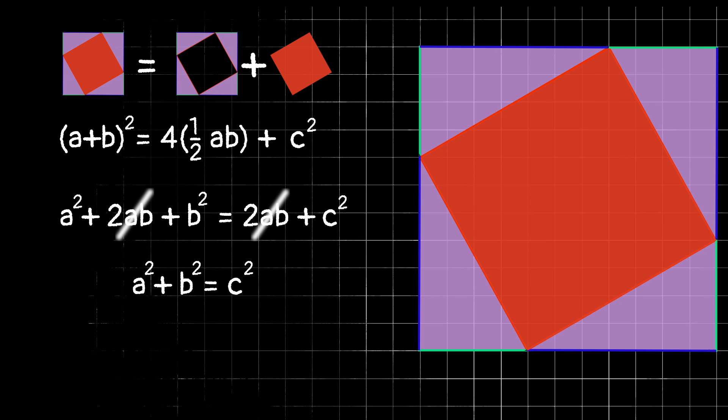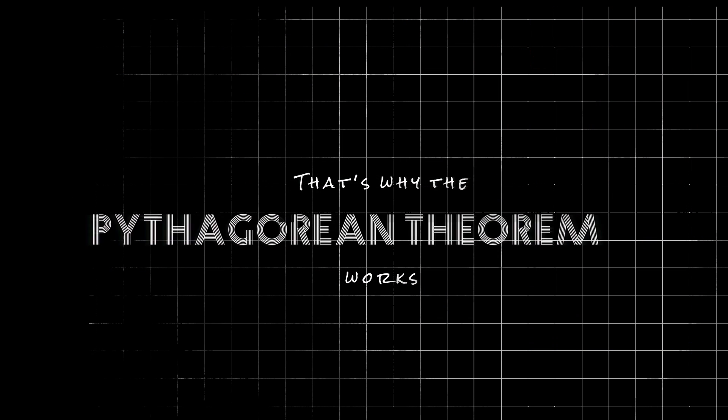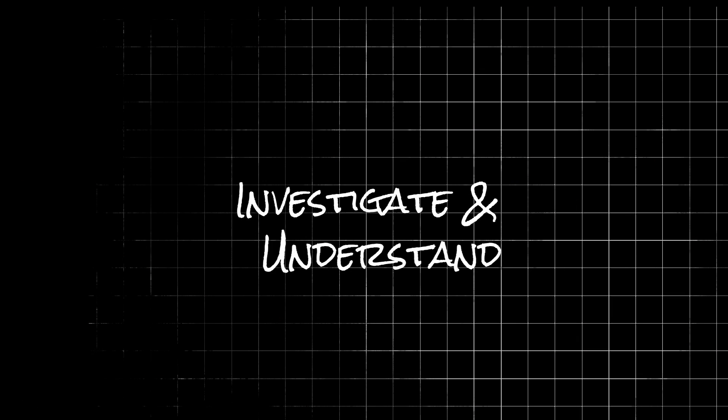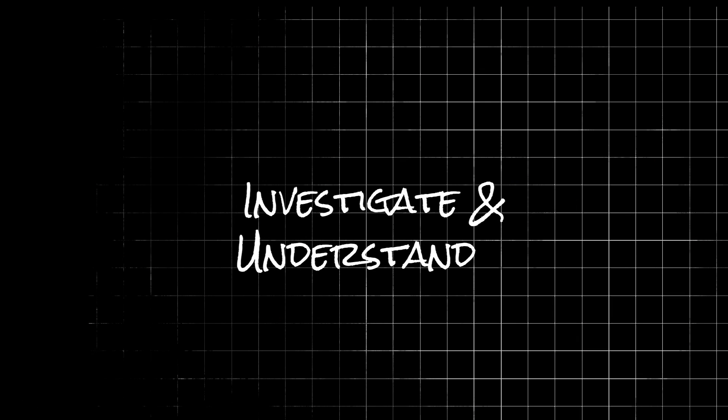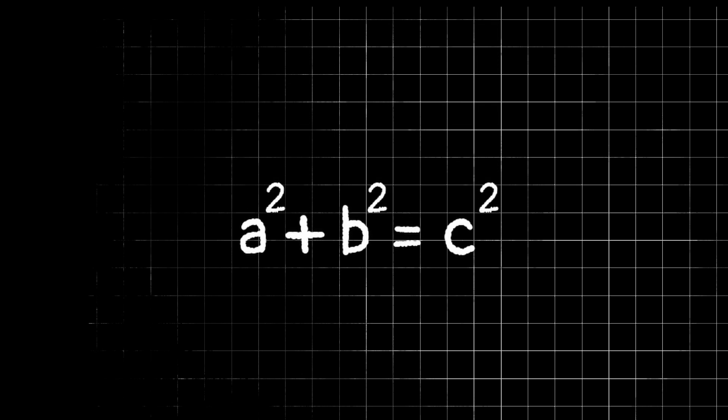And that leaves us with, what do you know, a squared plus b squared equals c squared. So, that's why the Pythagorean Theorem works. Now, instead of memorizing it, you understand visually why a squared plus b squared equals c squared for right triangles.